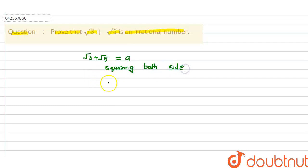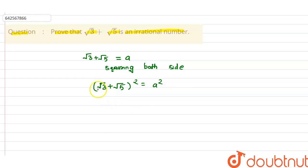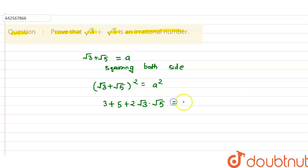When we square both sides, we get (√3 + √5)² = a². Opening this up: (√3)² + (√5)² + 2·√3·√5 = a², which gives us 3 + 5 + 2√3·√5 = a².